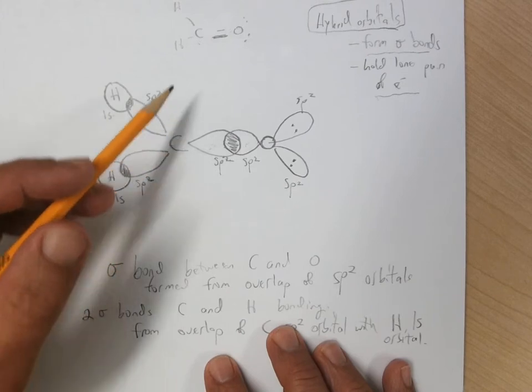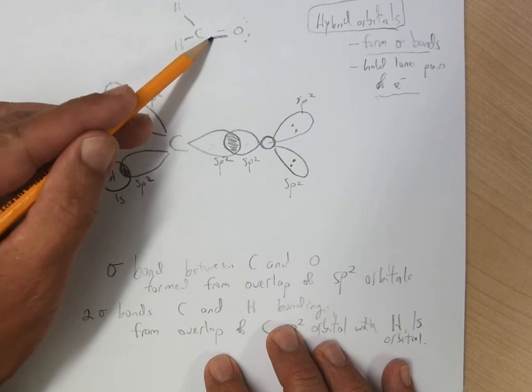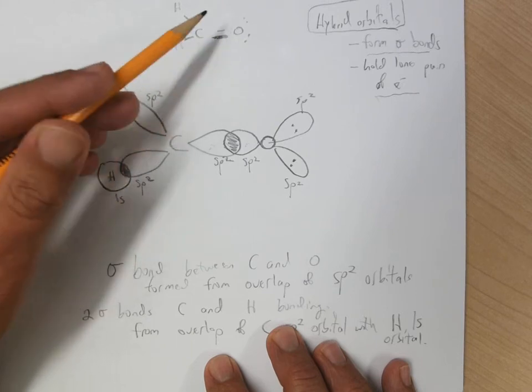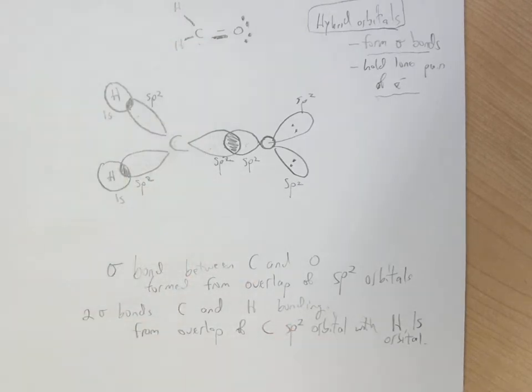All right, so now we've got the single bond between carbon and hydrogen, the single bond between carbon and hydrogen, the single bond between carbon and oxygen, and the two lone pairs of electrons all accounted for.